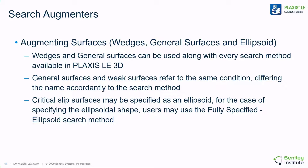Searching in Plaxis LE works by specifying a fundamental shape — either a wedge, a general surface, or an ellipsoid — which can then be modified or augmented by wedges, weak surfaces, or anisotropic bedding planes to try to achieve a lower factor of safety. These augmenting surfaces are a very powerful feature, especially when searching through faulted rock masses and areas where a weak surface may come into play.